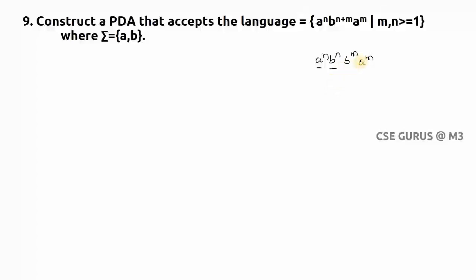So like this we can construct it. The logic is: number of a's — when I get 'a' I push into the stack; when I get 'b' I pop one 'a'. If I get z-naught (bottom of stack), I need to get more b's and push them, then compare with the trailing a's. Number of a's here equals number of b^n, and number of b^m equals number of a^m.